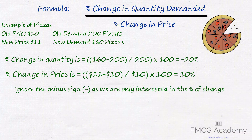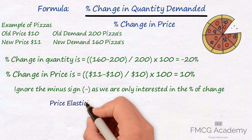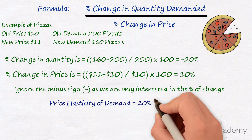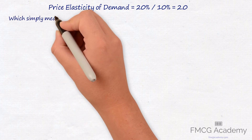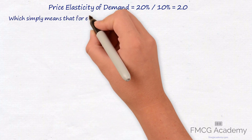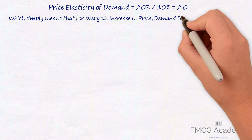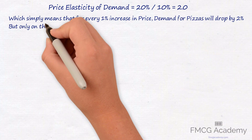So a price increase of 10% led to demand being reduced by 20%. To arrive at price elasticity of demand, we simply take percentage change in quantity, which is 20%, and divide by percentage change in price, which is 10%, to arrive at 2. This simply means that for every 1% change in price, demand for pizzas will drop by 2% on the basis of this data.